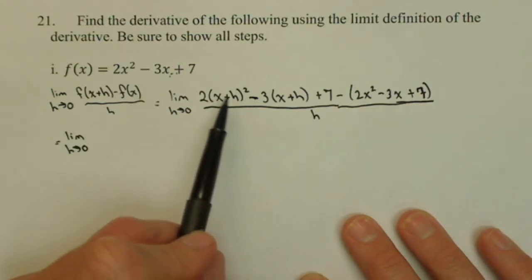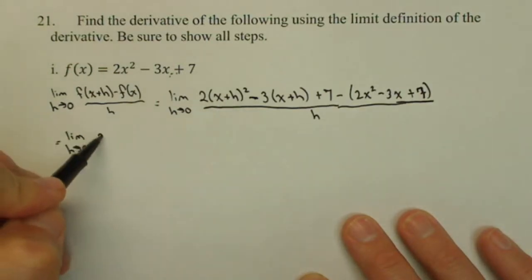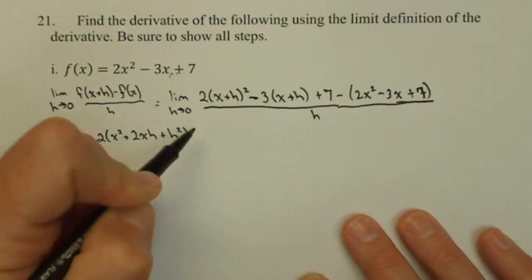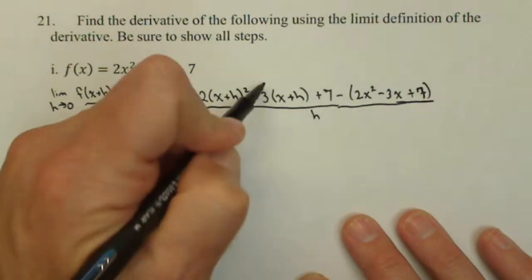Now, this is not x squared plus h squared. This needs to be foiled out, and if you do, you get x squared plus 2xh plus h squared minus, let's distribute this guy,